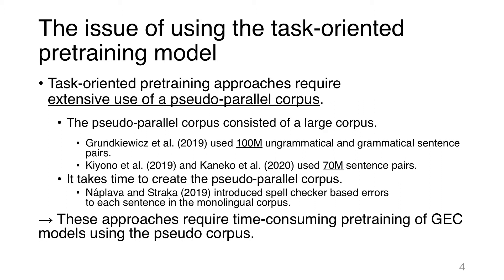Specifically, Náplava and Straka introduced word and character-level errors into sentences in a monolingual corpus. These errors are based on a spell checker, and they controlled how much error is introduced as a hyperparameter specific to the target GEC language. So this approach requires time-consuming pre-training of GEC models using pseudo-parallel corpora.